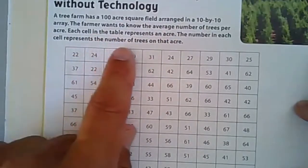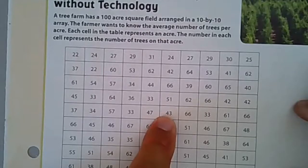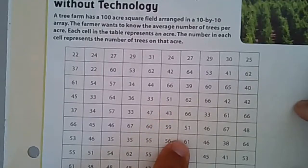Each cell represents an acre, so an acre here, an acre there, and so on. The number in each cell represents the number of trees in that acre. So this acre has 43 trees, this acre has 61 trees, and so on.